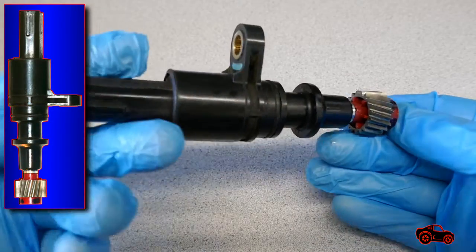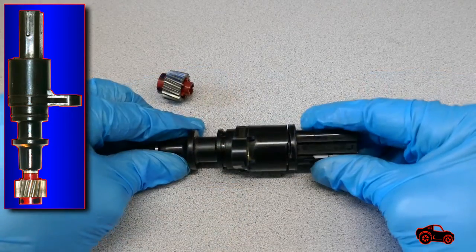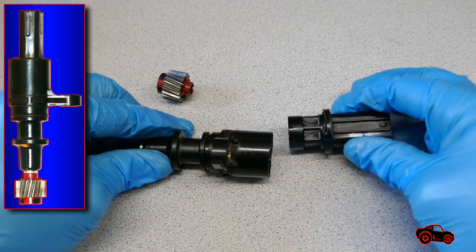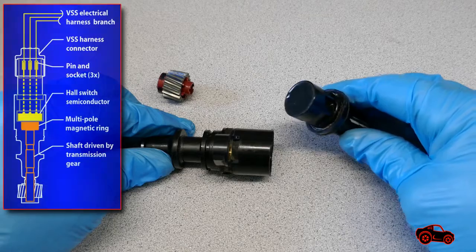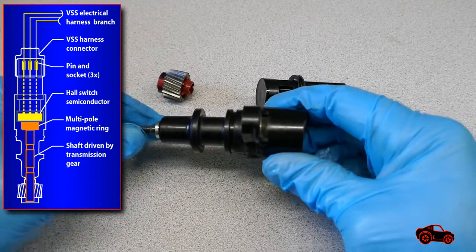This is a vehicle speed sensor that came from a 2004 Honda Civic. I opened it to show two important parts: the embedded Hall switch and the multiple magnetic ring mounted on the shaft.